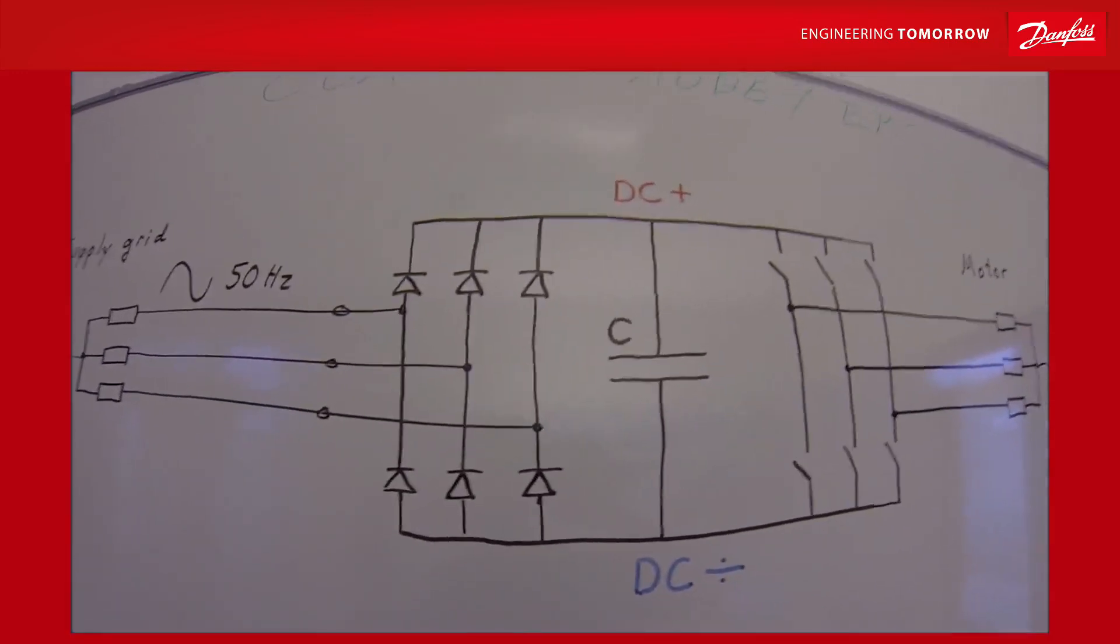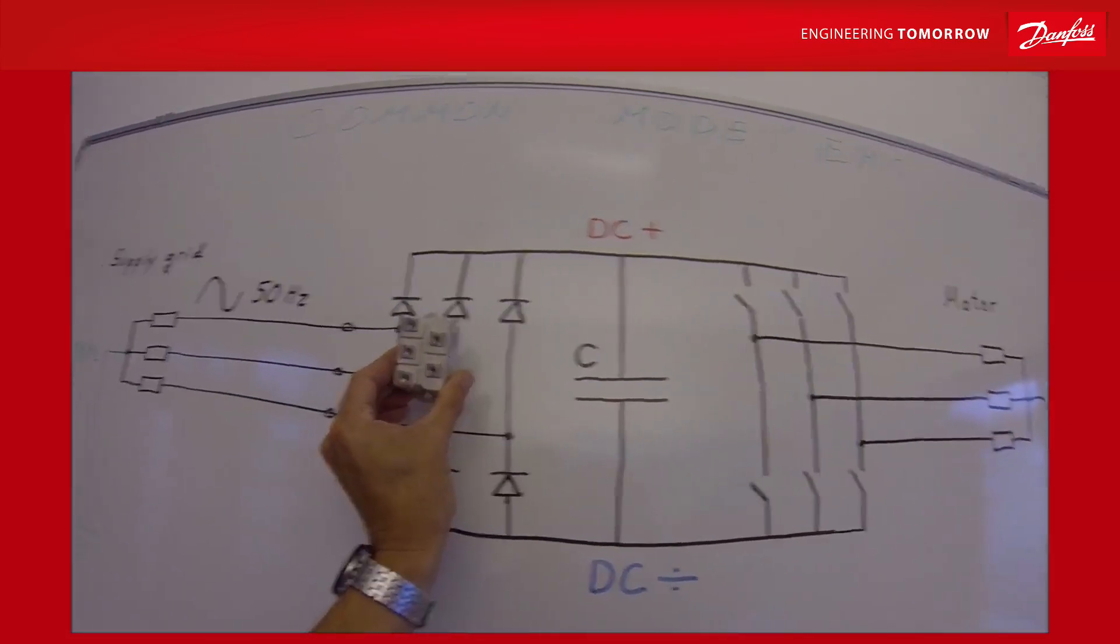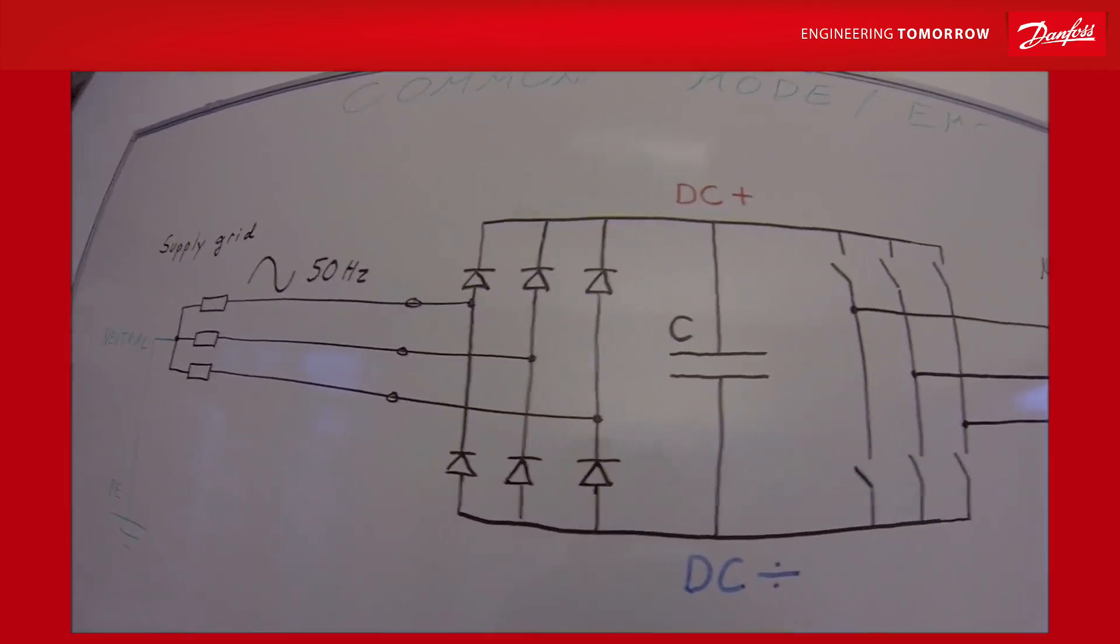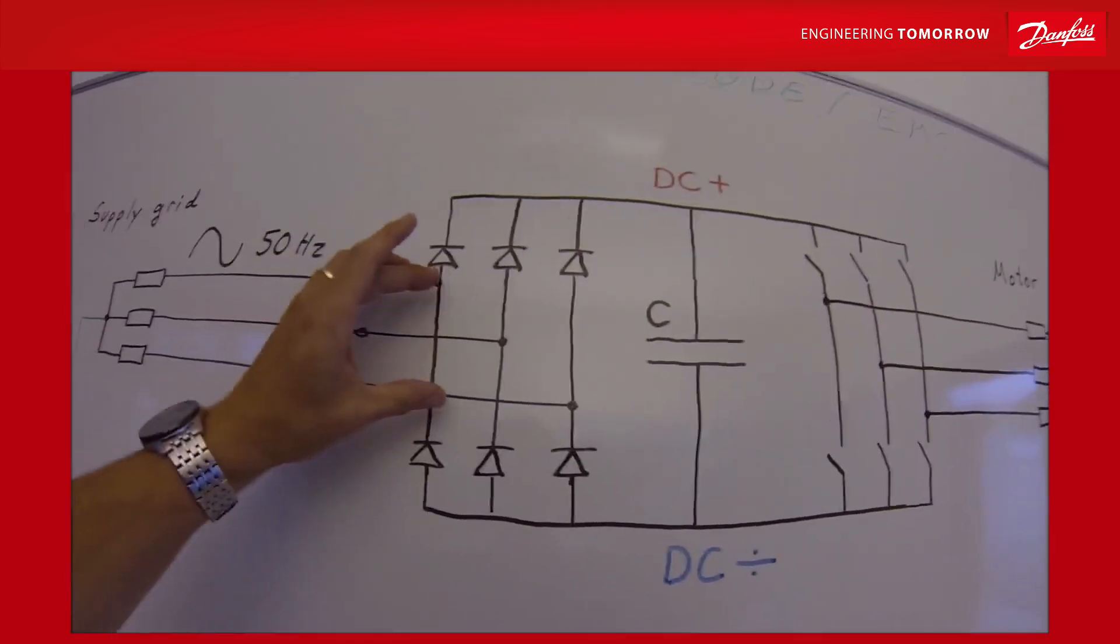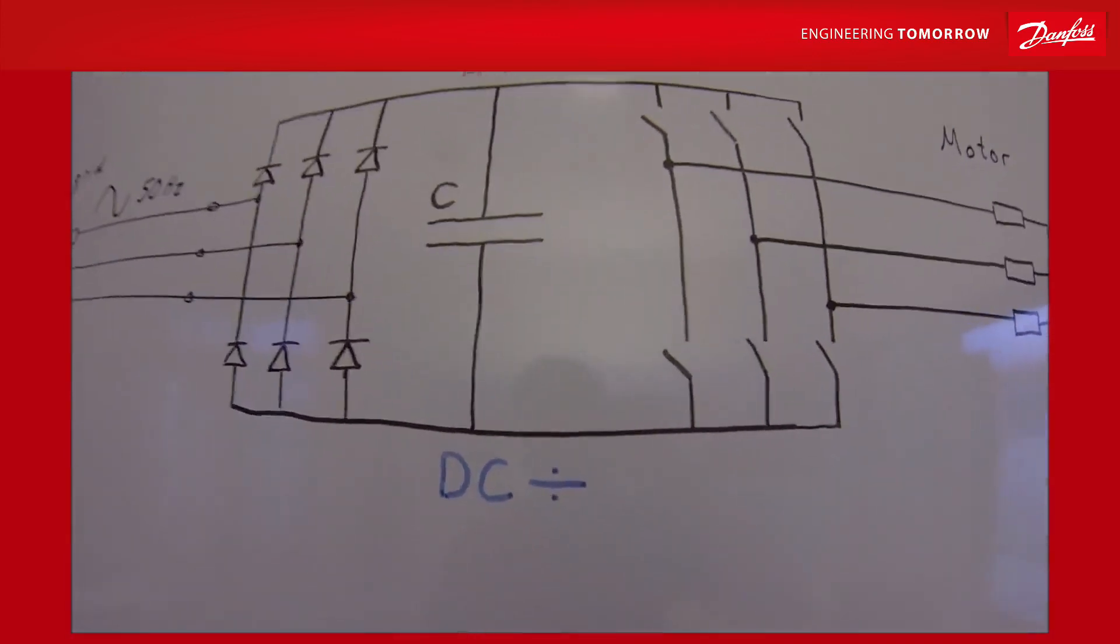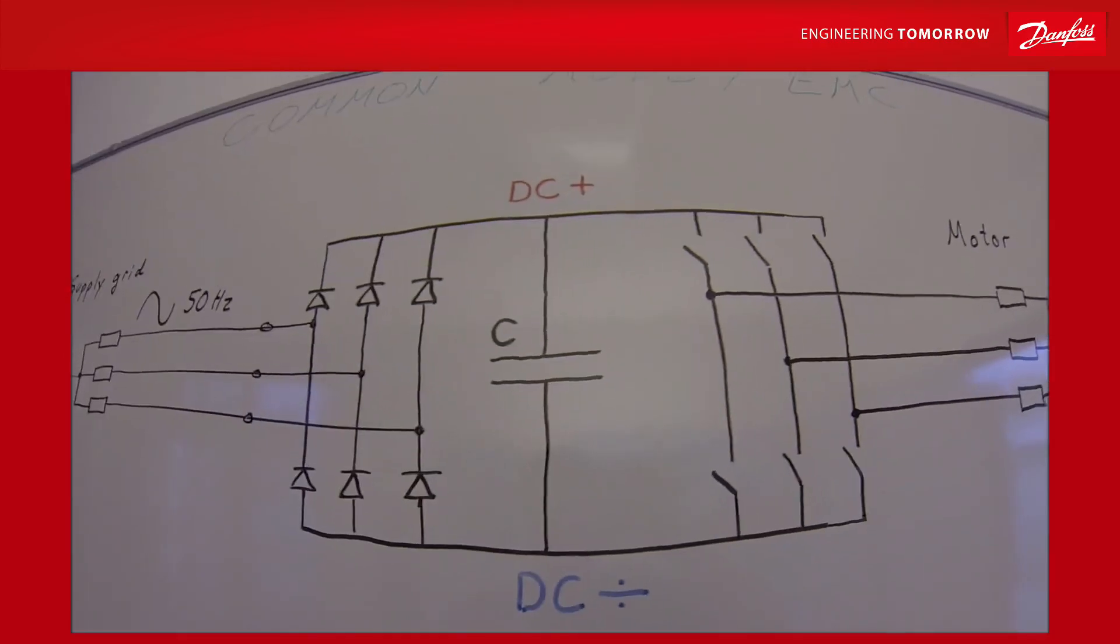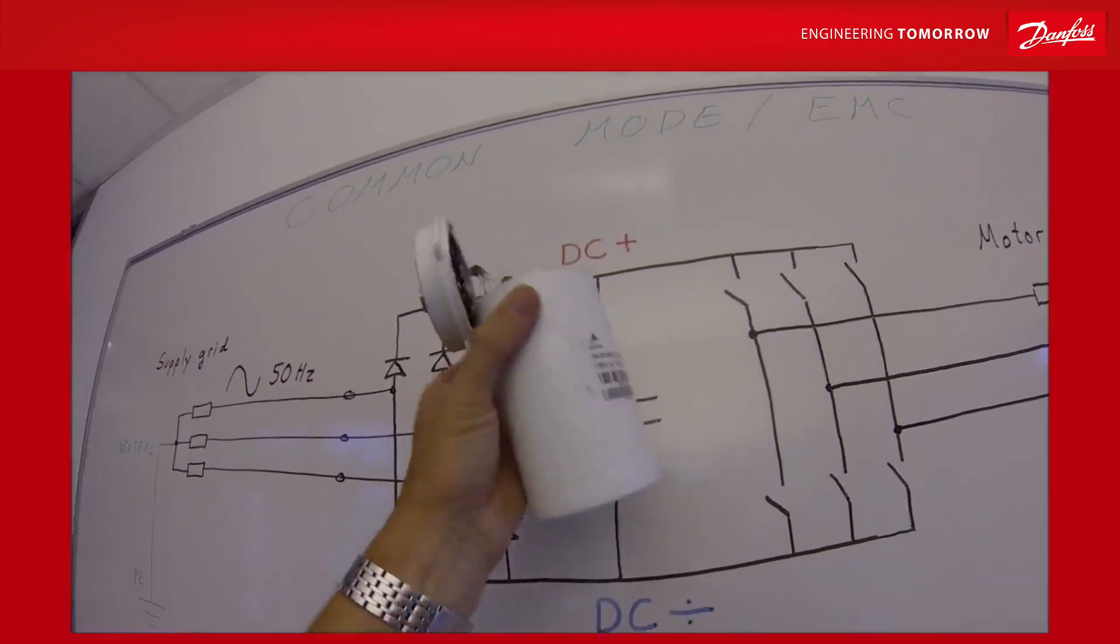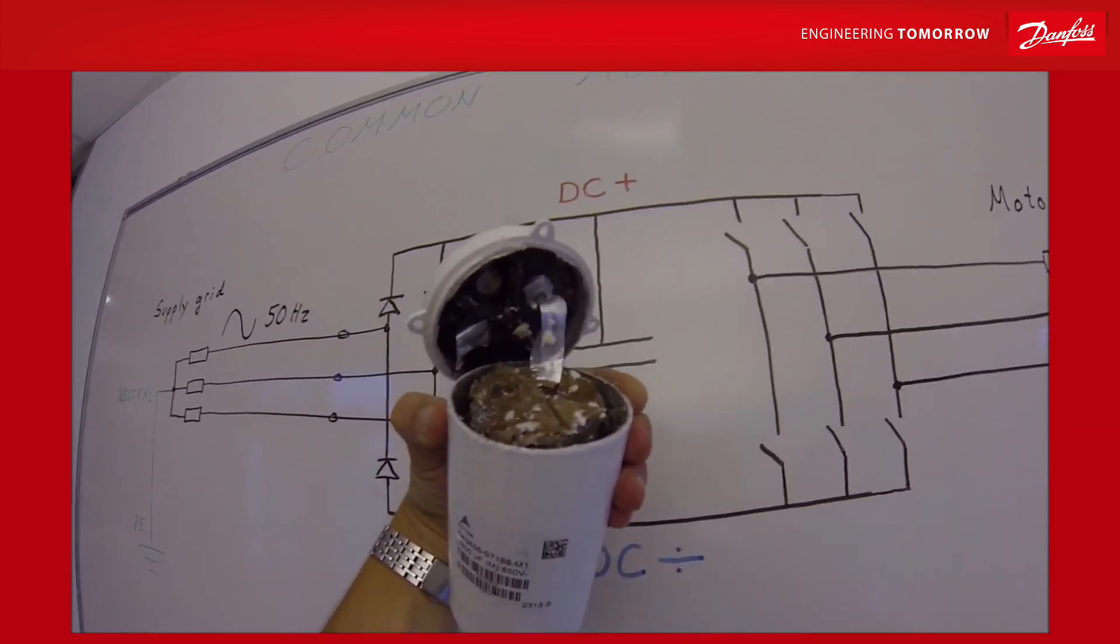What happened in the frequency converter is that we use a diode rectifier to rectify the AC into DC voltage. We store this energy and voltage on big capacitors.